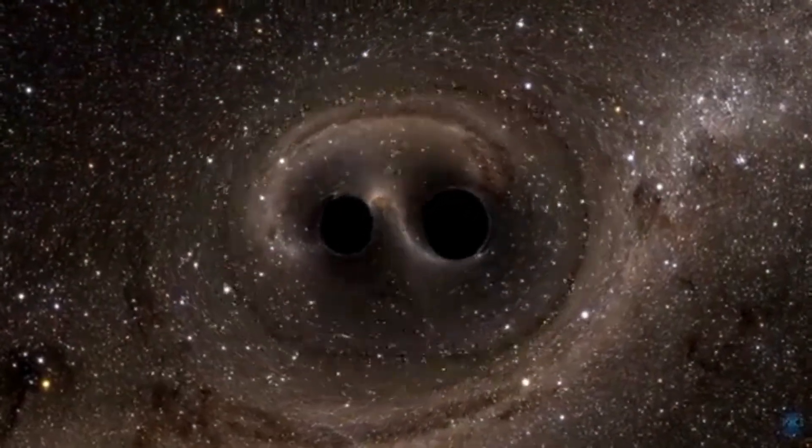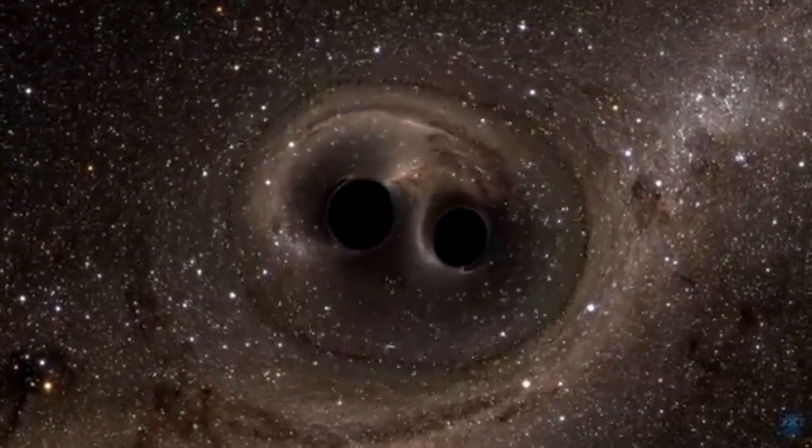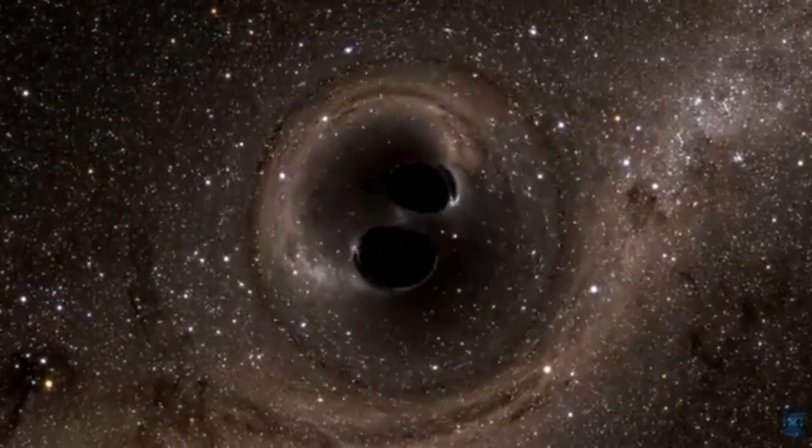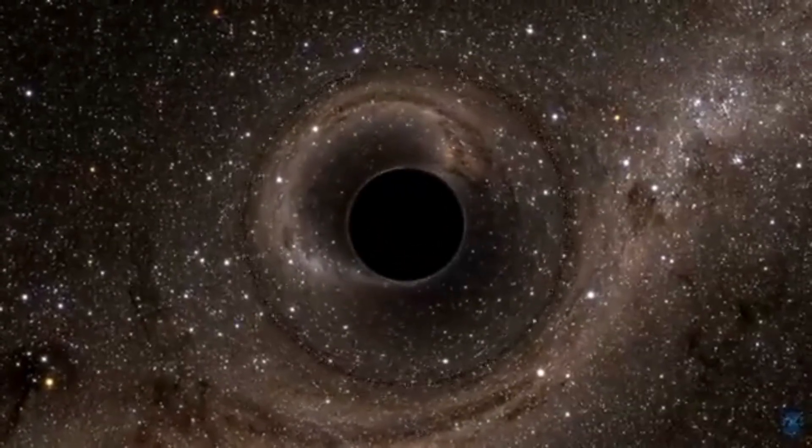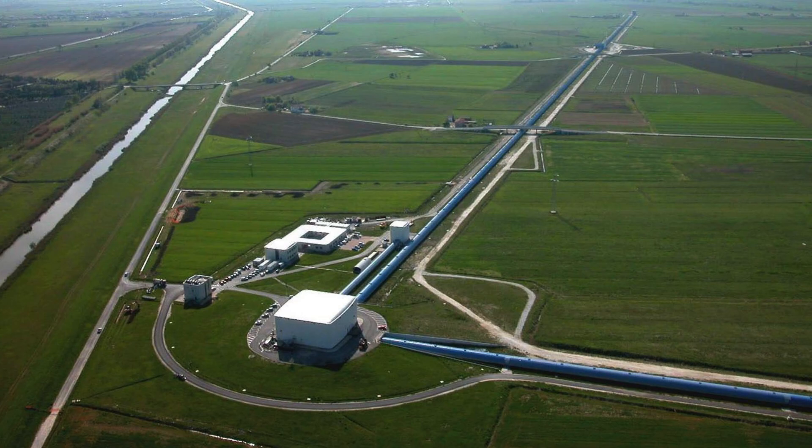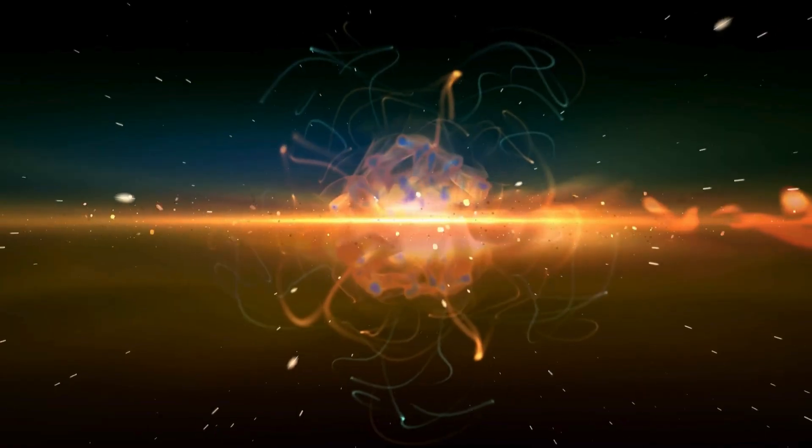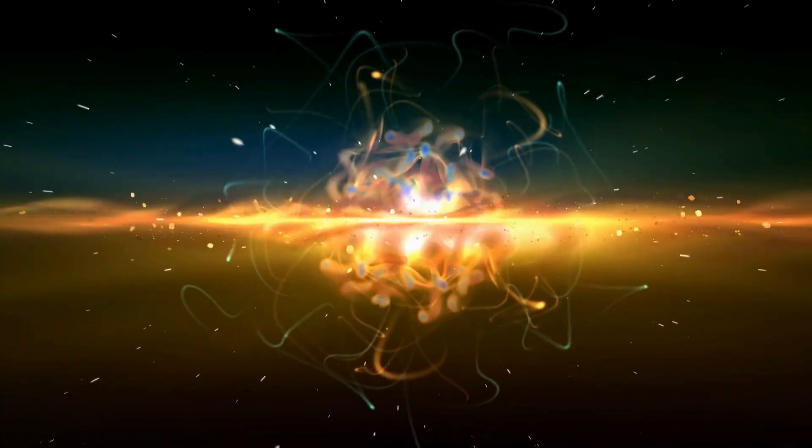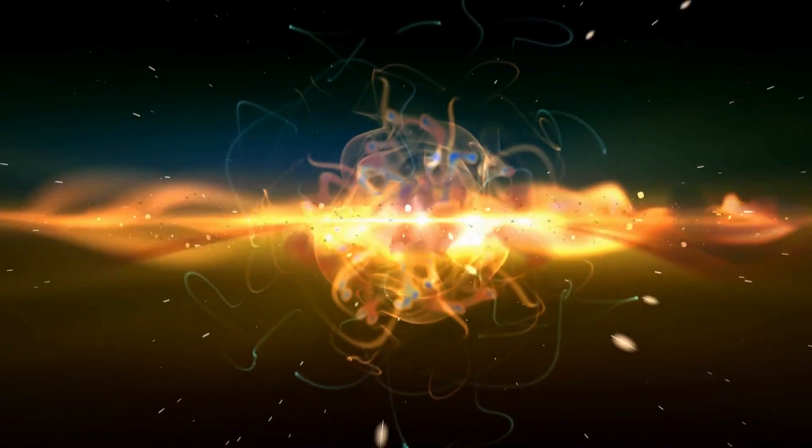Now imagine the moment of merging. Every time two black holes collide, part of their mass is blasted away as gravitational waves, ripples in the fabric of space-time. LIGO detected this in 2015, when two stellar black holes merged and released energy equivalent to three suns in a fraction of a second.